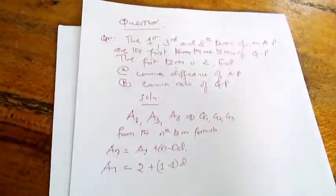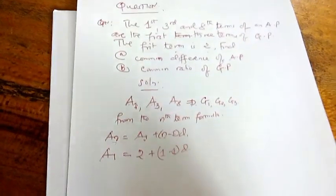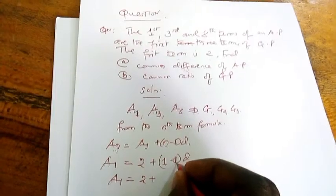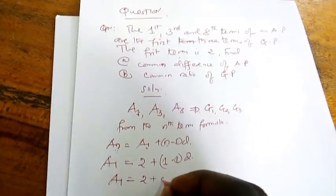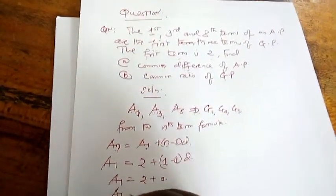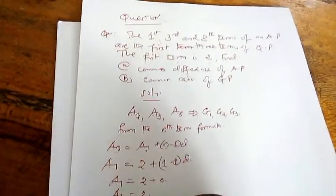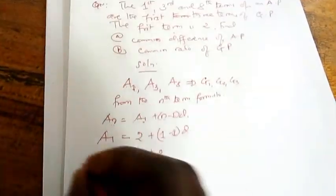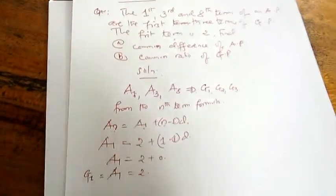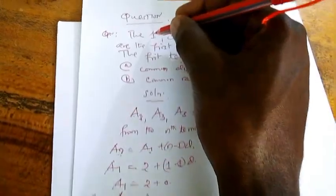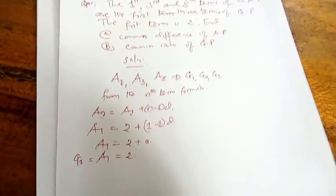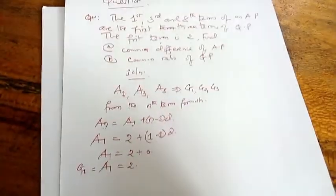We don't have the common difference; we've been told to find it. So after that, A1 equals 2 plus 1 minus 1 times D. One minus one equals zero, zero times D equals zero. So the first term equals 2. But remember that this is the first term, which is G1, the first term in geometrical progression.